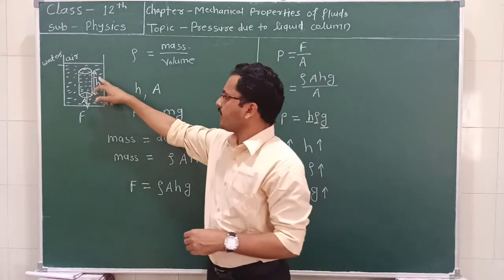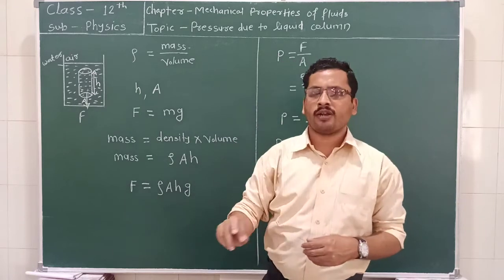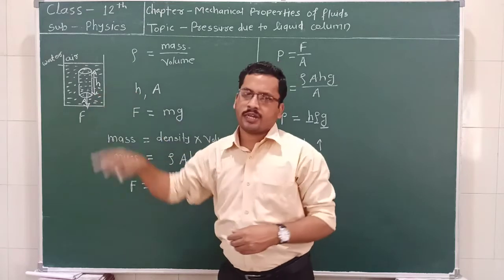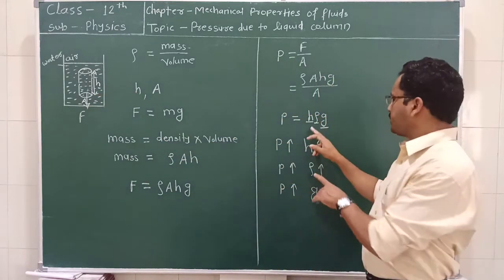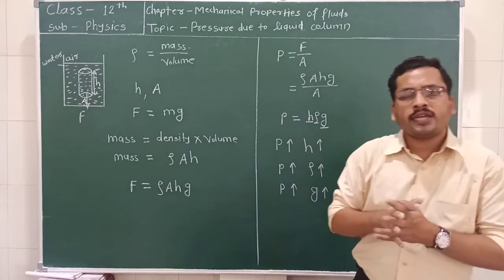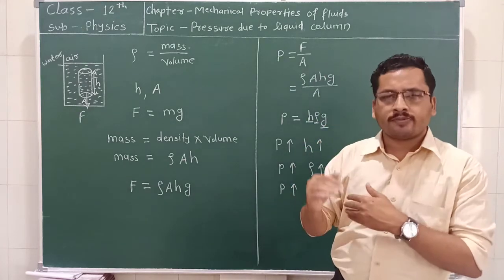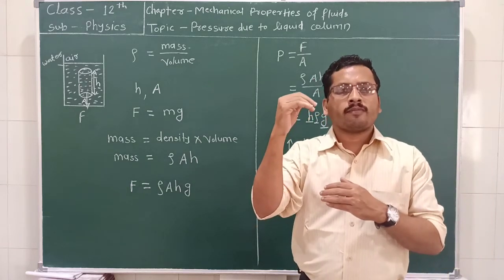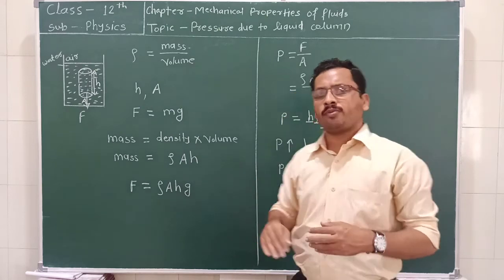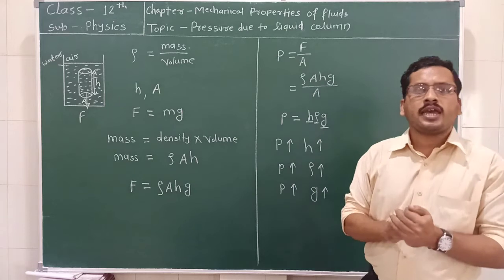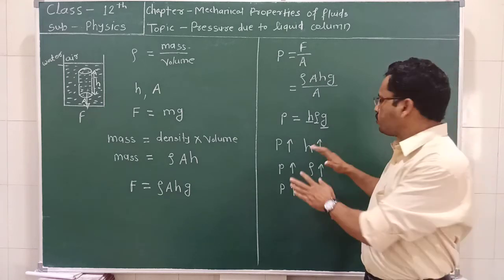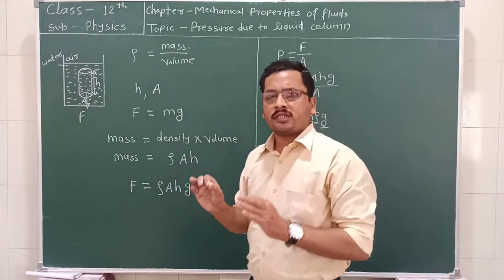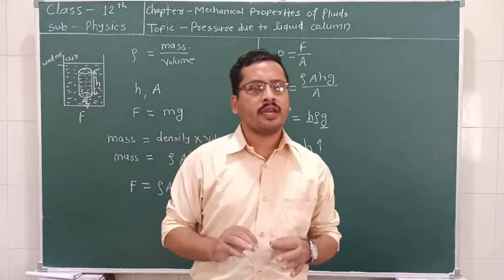This pressure is also dependent upon density. The density of the atmosphere goes on decreasing as we go beyond a certain height of about 8 km. Therefore the density decreases, and as a result the atmospheric pressure also goes on decreasing. The pressure at sea level is called the normal atmospheric pressure.